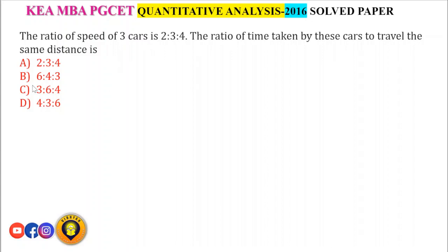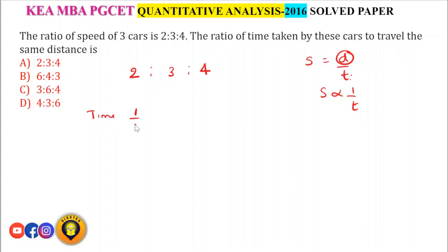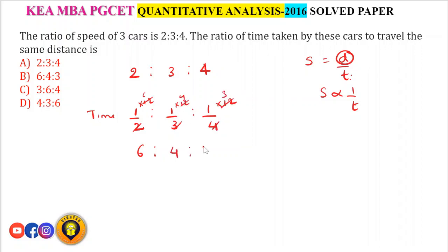The ratio of speeds of 3 cars is 2:3:4. Find the ratio of time taken to travel the same distance. Since distance is constant, speed and time are inversely proportional. Time ratio = 1/2 : 1/3 : 1/4. Multiplying by LCM of 2, 3, 4 = 12: time ratio = 6:4:3, which is option B.